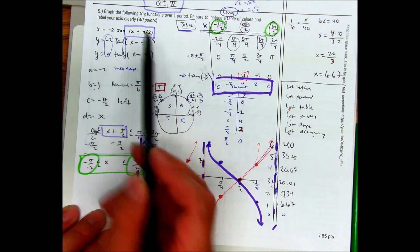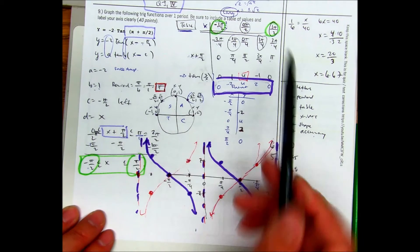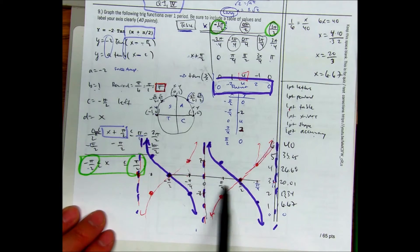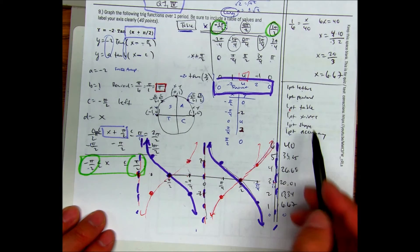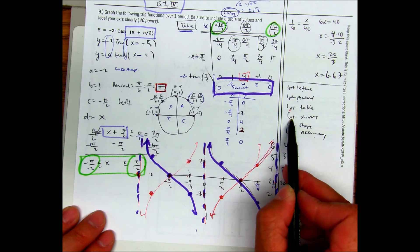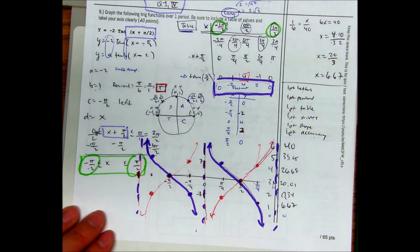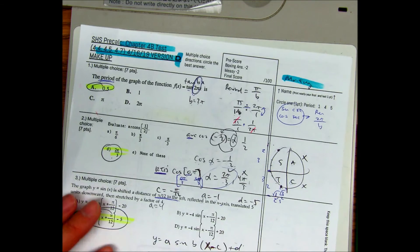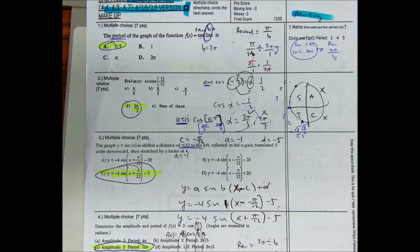The x-intercepts are the circled values on the graph. The shape is tangent going in the correct direction with accuracy verified. That back side was worth 65 points. Adding 65 plus 35 gives 100. Hope that was helpful for the test corrections — that's part of the game.